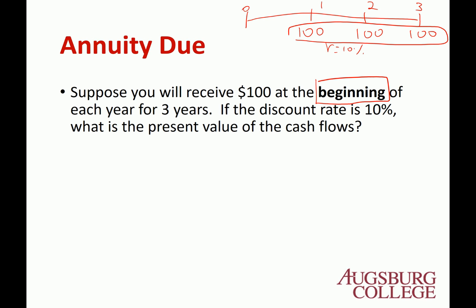Now, if this occurs at the beginning of each period, then this is end, right? The tick mark is all end by promise. The beginning of year one is actually today, beginning of year two is here, and beginning of year three is here. So it's basically one year sooner for Annuity Due.